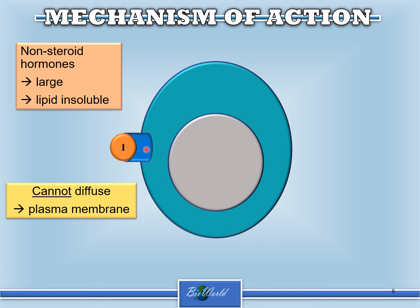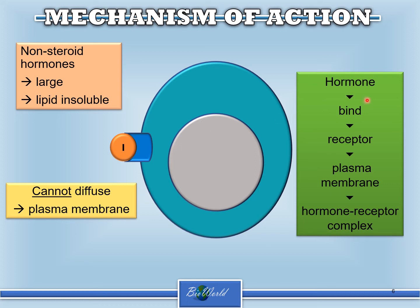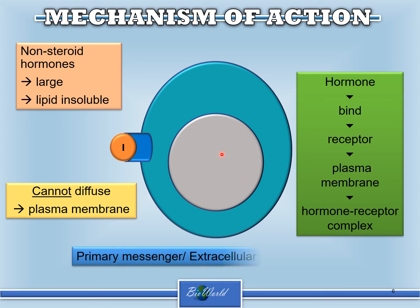What happens is the receptor for this hormone is located on the plasma membrane, unlike steroid hormones. In the case of steroid hormone action, the receptor can be either in the cytoplasm or in the nucleoplasm, because the steroid hormone can diffuse into the cell. But in the case of a non-steroid hormone, since it cannot diffuse, the receptor is located on the plasma membrane. The hormone will bind to the receptor on the plasma membrane and form the hormone receptor complex. Since the hormone cannot enter the cell, non-steroid hormones are also known as the primary messenger or the extracellular messenger.